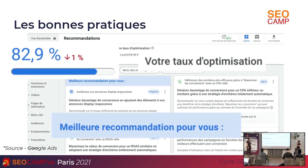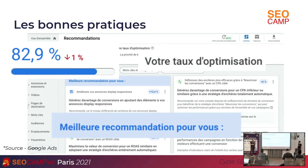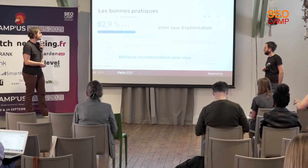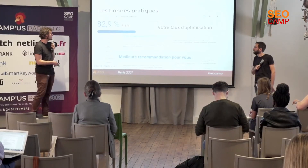On va voir quelles sont les améliorations, quel est votre score et comment vous pouvez améliorer vos annonces et votre visibilité. L'approche, c'est vraiment de dire qu'on analyse votre compte de manière personnalisée — c'est un robot qui le fait — il analyse toute une série de critères et il va sortir ce qu'il estime être les meilleures recommandations pour vous. On verra si ça se vérifie ou pas.